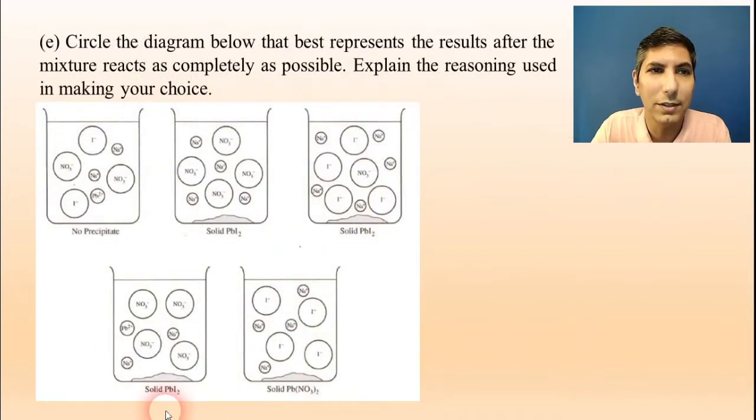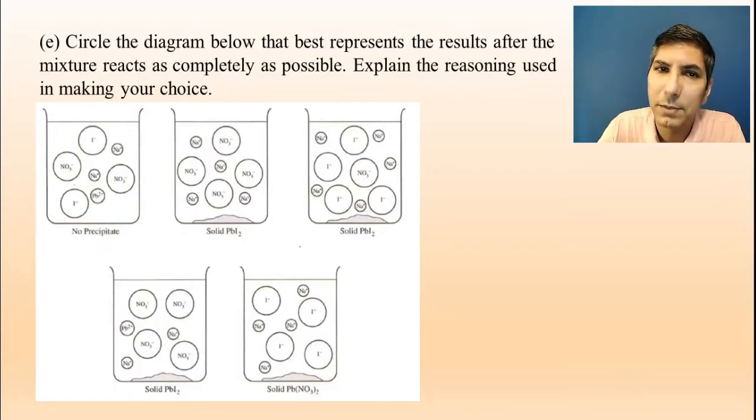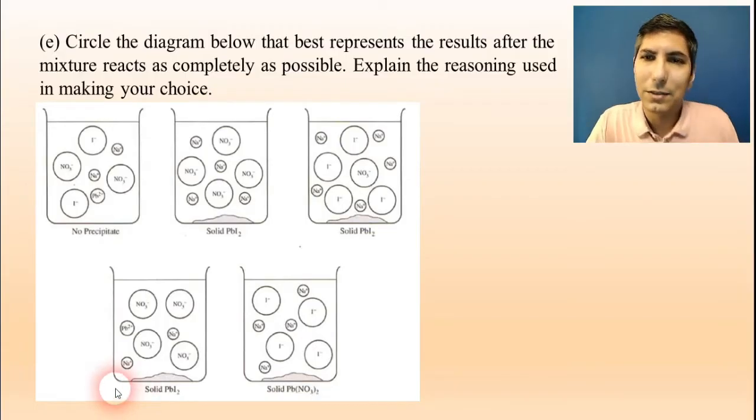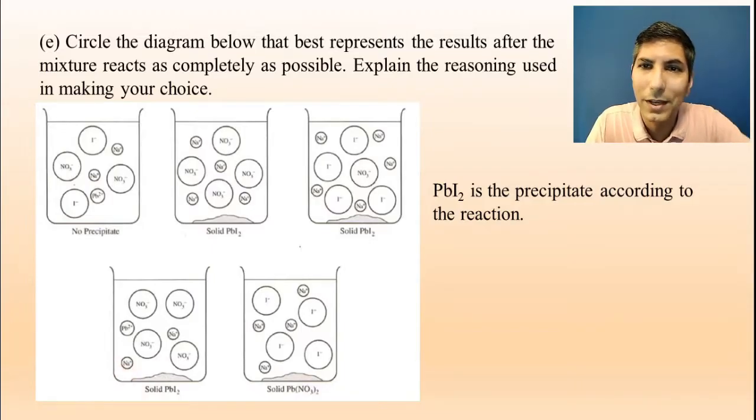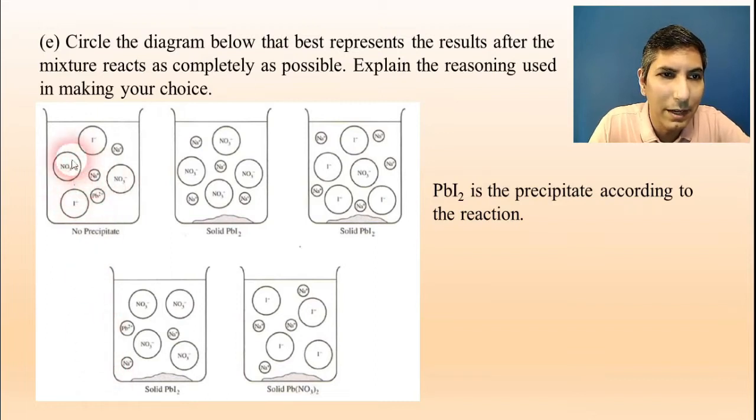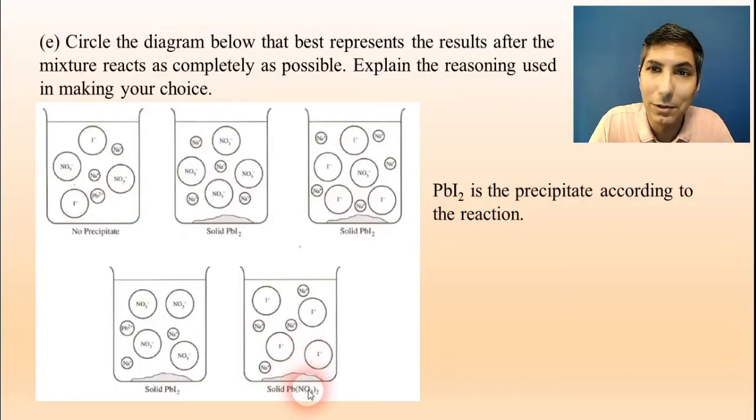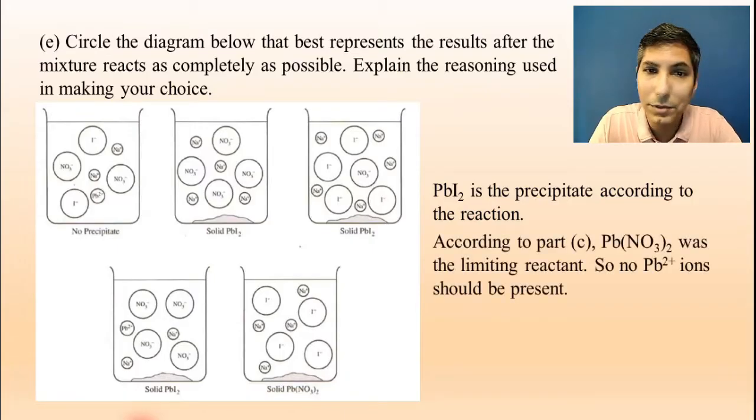Now, part E is a graphical question. It says circle the diagram below that best represents the results after the mixture reacts as completely as possible. Explain the reasoning used in making your choice. Now, some students get caught up on these problems. Use process of elimination as much as you can. Use what you know to eliminate the choices that are incorrect. So for example, there are a couple things that we know. We know that lead(II) iodide is the precipitate. The balanced equation just comes right out and tells us that PbI2 is the solid. So we can automatically eliminate the first one and the last one because those don't show PbI2 as the solid. So we're already down to three choices.